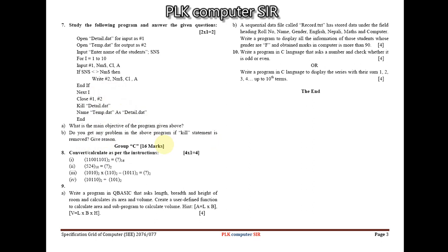Question 9a and 9b complete the Q Basic section (totaling 15 marks). Question 9a: Write a program in Q Basic that asks the length, breadth, and height of a room and calculates the area and volume — create a user-defined function to calculate area (A = L × B) and a Sub program to calculate volume (V = L × B × H).